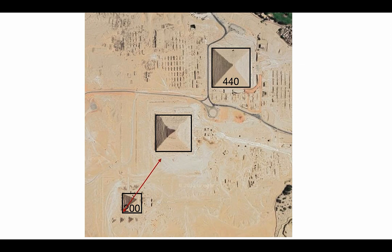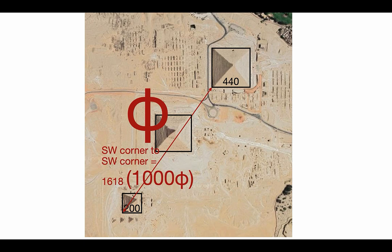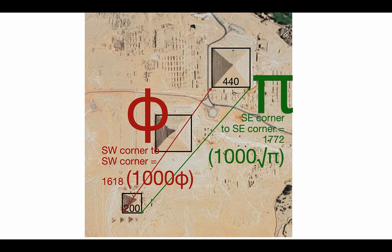Remember that we started out with this from Ian, where he shows that from the southwest corner of Menkaure to the southwest corner of Khufu is a thousand phi royal cubits. And then from the southeast corner of Menkaure to the southeast corner of Khufu is a thousand times the square root of pi. So you've got phi and pi in this connection. It's actually Khafre that's offset — we often think Menkaure's offset, but it's Khafre that's offset if you take this alignment between Khufu and Menkaure.